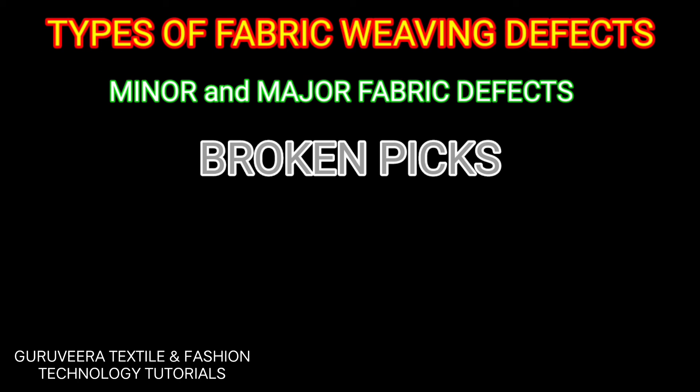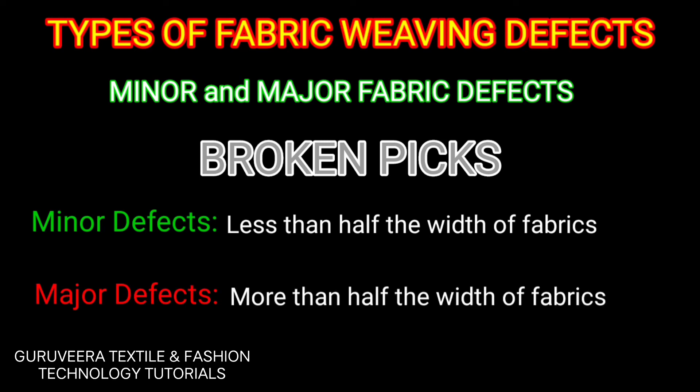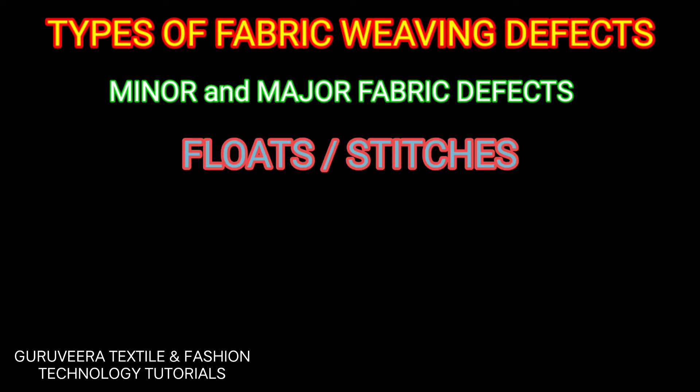Broken picks usually occur in looming due to one reason or another. If picks are broken for less than half the width of the fabric, it is considered a minor defect. If picks are broken for more than half the width of the fabric due to mechanical reasons, it is considered a major defect.